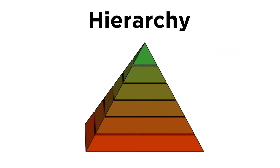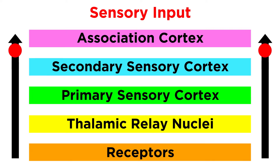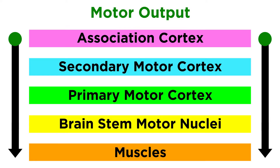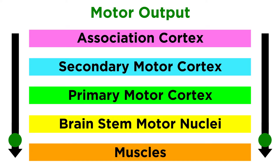The first thing to understand about the sensory motor system is its hierarchy. Just the way sense perception involves signals getting shuttled to a primary cortex, then a secondary cortex, and then an association cortex, motor output typically begins in the association cortex and then moves through a secondary motor cortex, primary motor cortex, brain stem motor nuclei, all the way to a muscle.